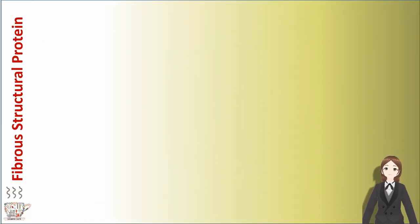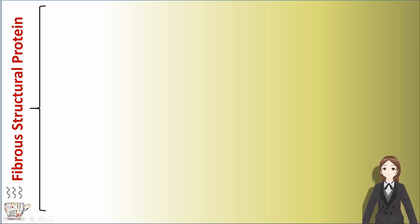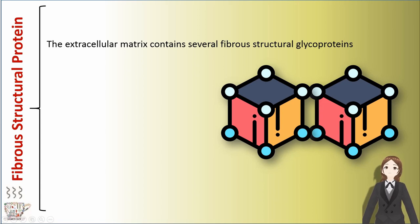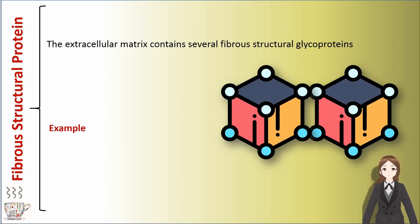The second component of the extracellular matrix is fibrous structural proteins. The extracellular matrix contains several fibrous structural glycoproteins. Two examples of these proteins are collagen and elastin.